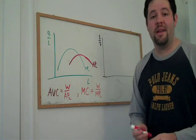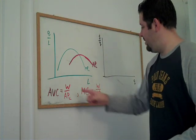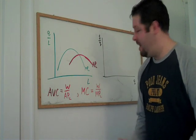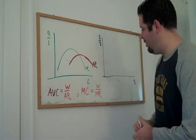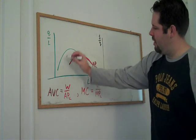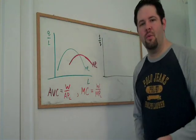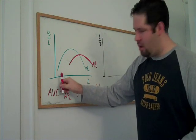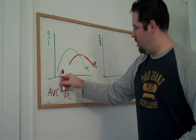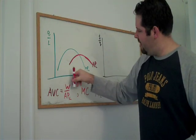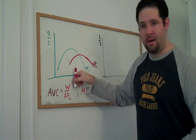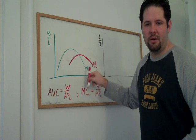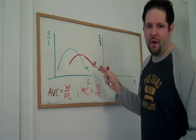Let's think about what these equations imply for the shape of average variable cost and marginal cost. Notice that both of these are inverted U-shaped. For low amounts of labor, marginal product is low. For intermediate amounts, marginal product is high. For high amounts of labor, marginal product is low. Same goes for average product.